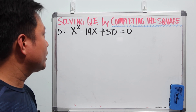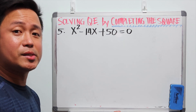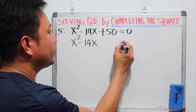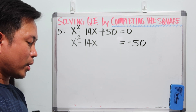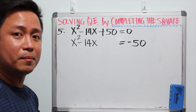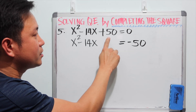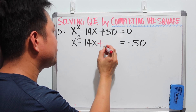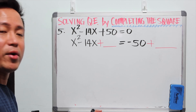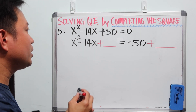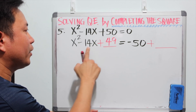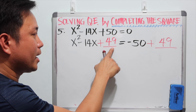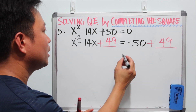Now for example number 5: x squared minus 14x plus 50 is equal to 0. The first step is to isolate the x terms on the left and the constant on the right. So we have x squared minus 14x is equal to negative 50. Be careful — a common mistake is forgetting to change the sign when transferring the constant, so you should have minus 50 on the right side. We add 49 to both sides, because half of negative 14 is negative 7, and squaring negative 7 gives 49.